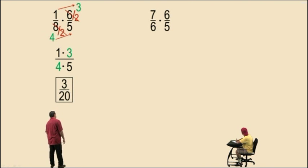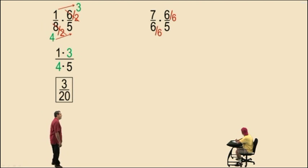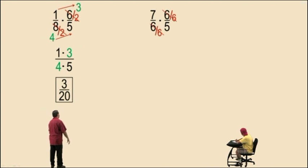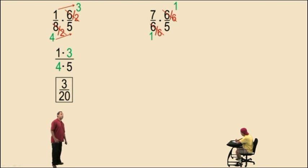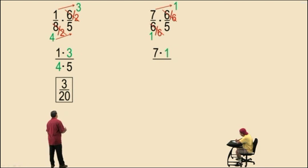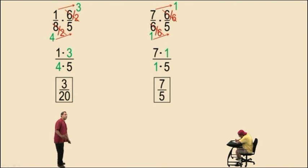Let's do another one. 7 sixths times 6 fifths. Notice 6 and 6 will cancel — they both have a common factor of 6. 6 divided by 6 is 1, 6 divided by 6 is 1. We say they cancel out. In the numerator we have 7 times 1, and in the denominator we have 1 times 5. So our answer is 7 fifths. Some people look at the problem and say the 6s cancel, so my answer is 7 fifths. That's fine, but always show your work.